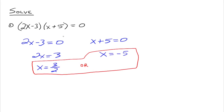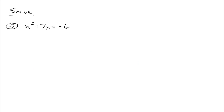So if you've got a product equal to zero, you can set each of the factors equal to zero and solve each one individually. Now, this next one is not already factored. Here's the plan of attack: for nonlinear polynomial equations, we need all the terms of our polynomial on one side of the equal sign and zero on the other. So we add 6 to both sides to get x² + 7x + 6 = 0. Now we want to factor that polynomial on the left-hand side.